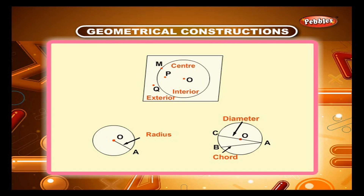A segment like OA, from the center to a point on the circle, is the radius of the circle. A segment like AB with both endpoints on the circle is a chord of the circle. A chord like AC which passes through the center O is the diameter of the circle. The diameter is twice the radius.